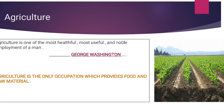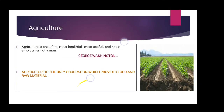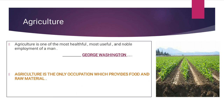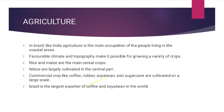Raw materials are produced with the help of agriculture; then secondary manufacturing and production happen, followed by distribution. If you don't have distribution, you don't have services. Each and every sector is totally dependent on agriculture. So now we are going to talk about Brazilian agriculture.